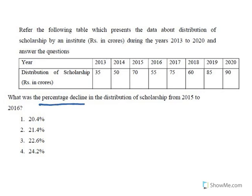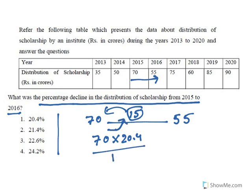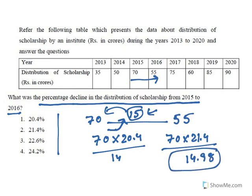The last question: what was the percentage decline in distribution of scholarship from 2015 to 2016? In 2015 it was 70 crores, declining to 55 crores in 2016 — a decrease of 15 crores. We need to find what percentage of 70 this represents. 21.4% of 70 is approximately 14.98, which is very close to 15. So the approximate percentage decline is 21.4%. All these questions just require plugging in the numbers from the data.